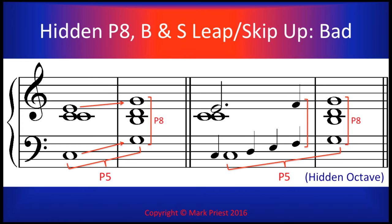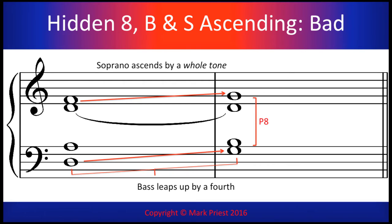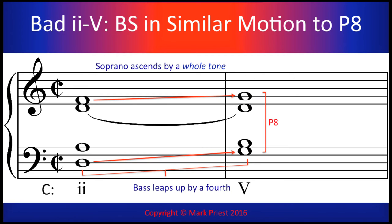Such movement only sounds bad in the upward direction, and then only when both outer voices are leaping or skipping over notes of the scale. From experience, hidden octaves even sound awkward when one of the outer voices leaps upward and the other progresses into the octave by a whole tone in the same direction — which is precisely what happens in this 2-5 progression. The soprano is moving upwardly in similar motion to the bass, by a whole tone from the third to the octave of the bass, and it just doesn't sound good.